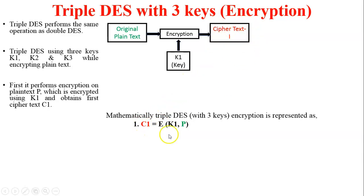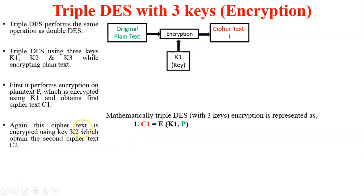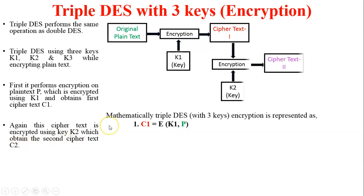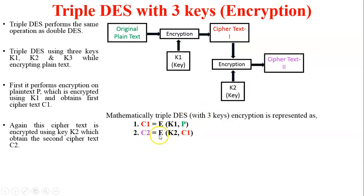Next, ciphertext C1 is encrypted using key K2, which obtains the second ciphertext C2. In the figure, the second encryption process has two inputs: C1 and K2 key, and it generates ciphertext C2. Mathematically: C2 = E(K2, C1). Substituting the value of C1 from equation one: C2 = E(K2, E(K1, P)).